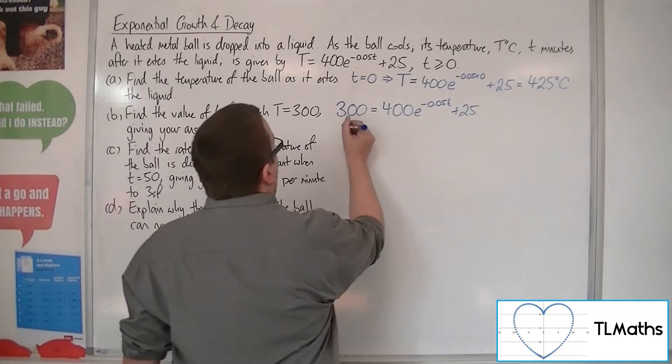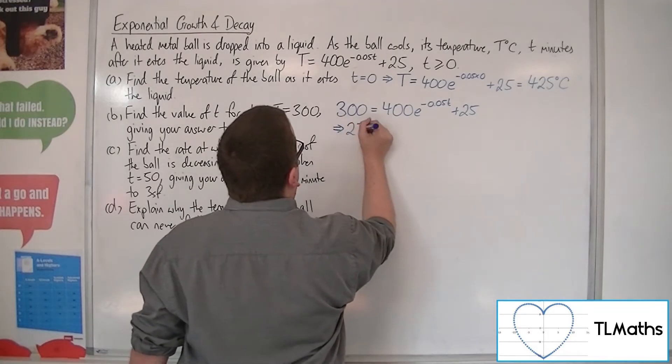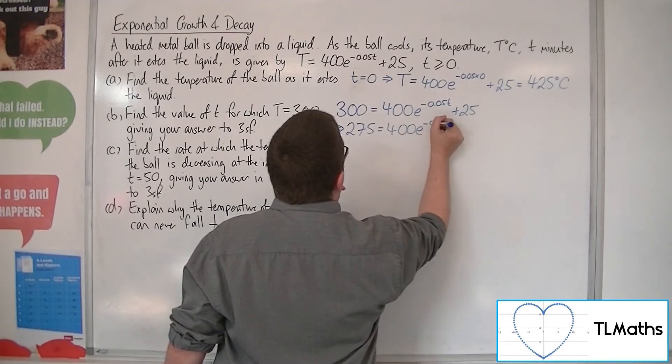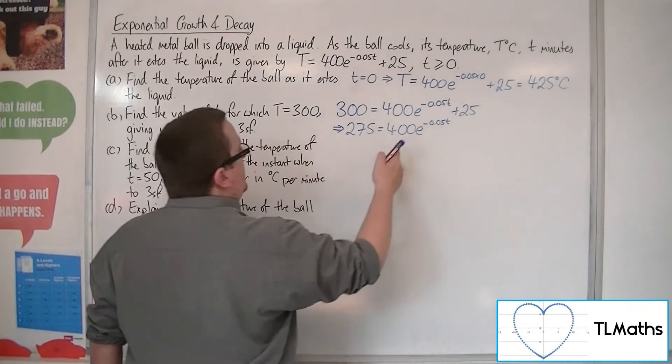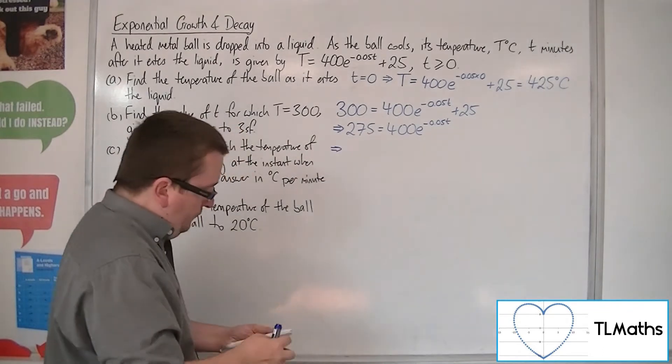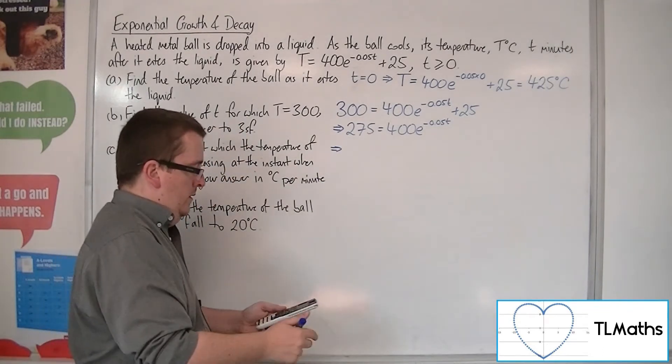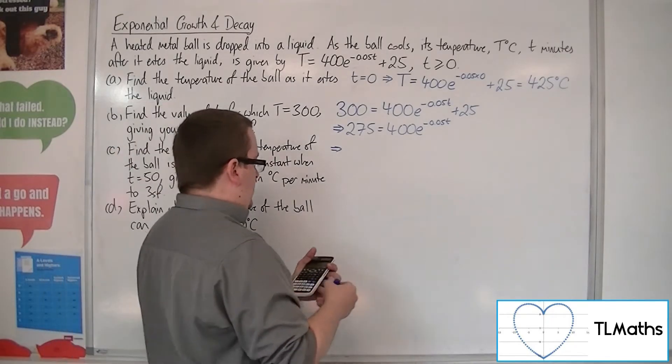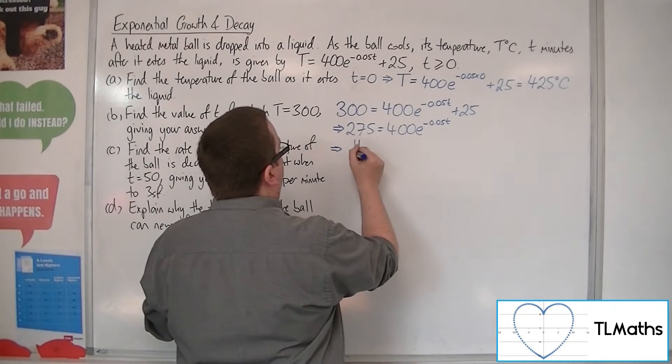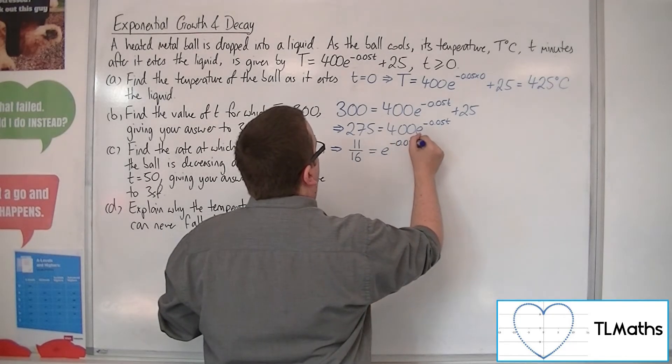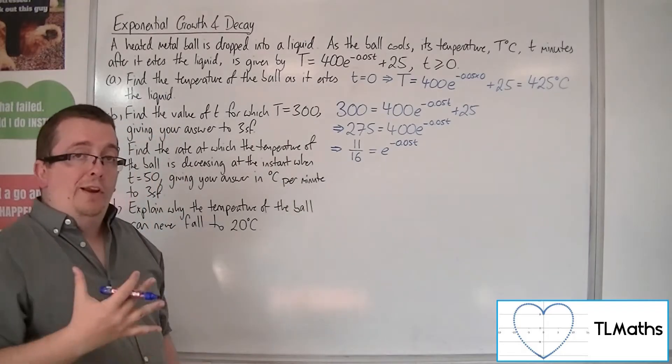So 275 is 400E to the minus 0.05T. So 275 divided by 400 is 11 sixteenths, which is E to the minus 0.05T.